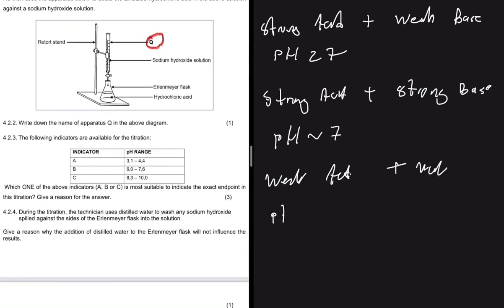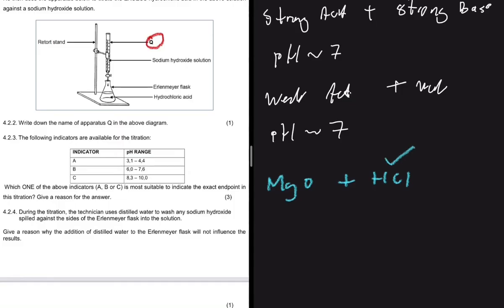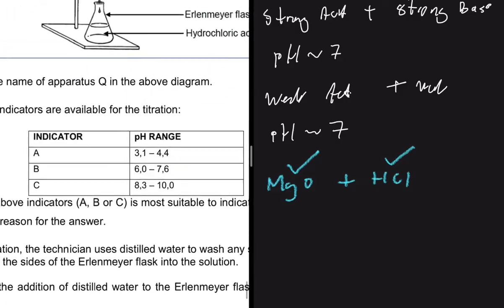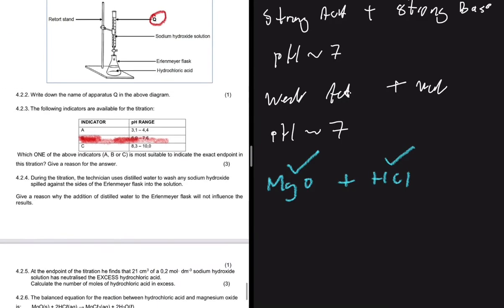In our case we have magnesium oxide plus HCl. Hydrochloric acid is a strong acid, and magnesium oxide is a strong base. So we have a strong acid and a strong base, meaning the resulting pH will be approximately 7. The suitable indicator is indicator B, which has a pH range of 6 to 7.6. The answer for 4.2.3 is B, because we have a titration between a strong acid and a strong base.